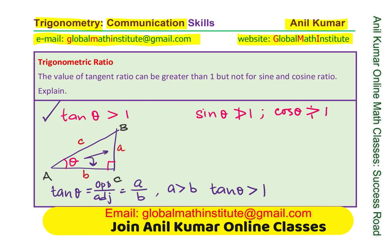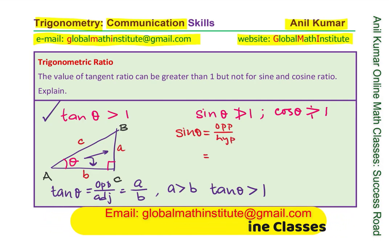Now let us look into the second case, which is: why can sin theta and cosine theta not be greater than 1? Let us again consider the same triangle. In this triangle, what is the value of sin theta? Sin theta is opposite over hypotenuse. So that means sin theta will be A over C.